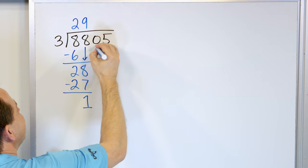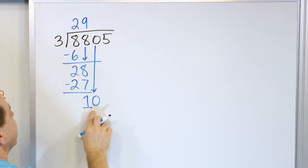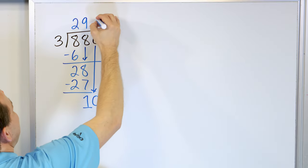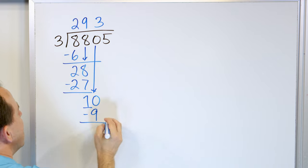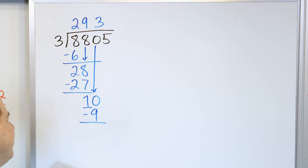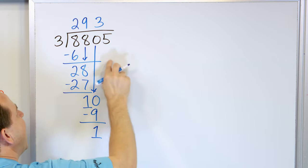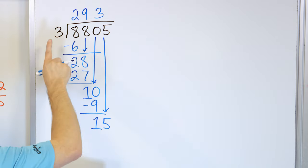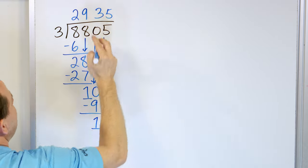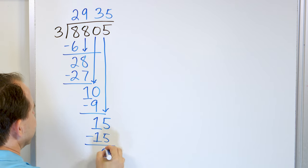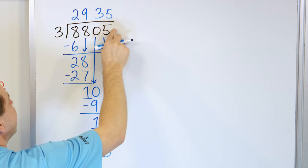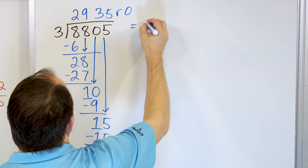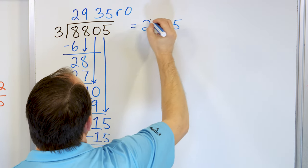After we subtract, grab the next digit — it's a 0. We have a 10. 3 times 3 is 9, 3 times 4 is 12 — too big. So it has to be 3 times 3, which is 9. 10 minus 9 is 1. Grab the next digit, which is this one, and now you have a 15. 3 times 5 is exactly 15. Subtract, get a 0. There is no next digit, so the remainder is just 0.